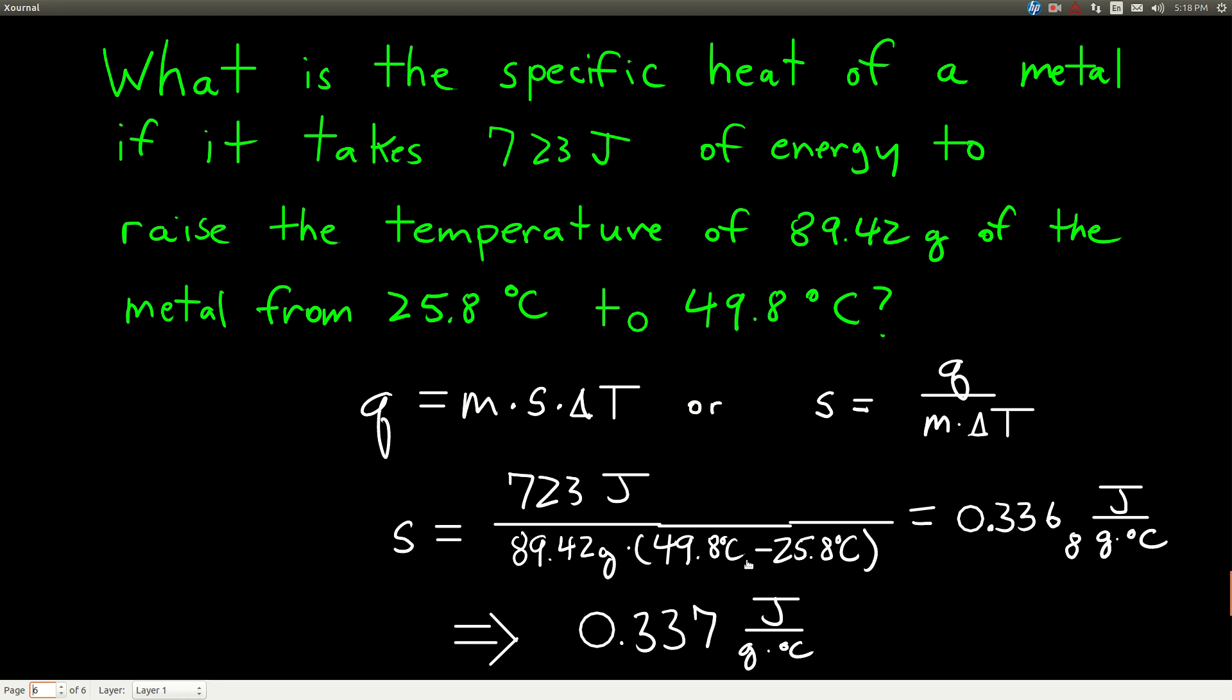Plugging in, the energy is Q, positive. m is our mass, 89.42 grams. Our delta T is final minus initial temperature. When you plug in, because this has three sig figs and our delta T also has three sig figs, we end up with 0.3368 joules per gram degree Celsius, so we're rounding to 0.337 joules per gram degree Celsius for the specific heat capacity.